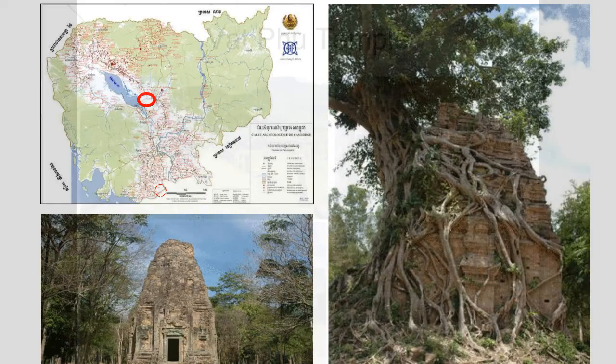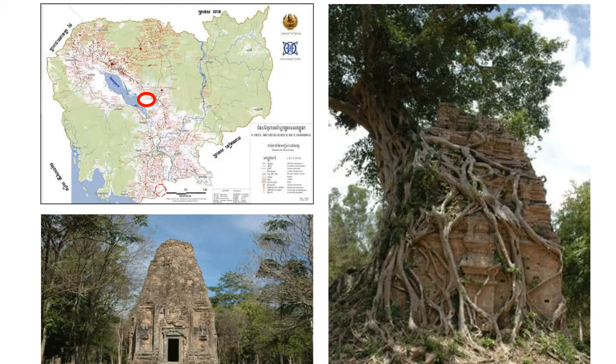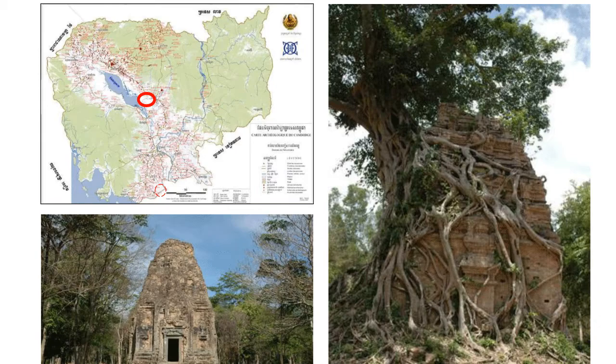The Water Chen La is located in Kampong Thom province in the middle of Cambodia. The site is now called Sambor Prei Kuk in Kampong Thom. There are some brick temples — many brick temples and I think only one sandstone temple.